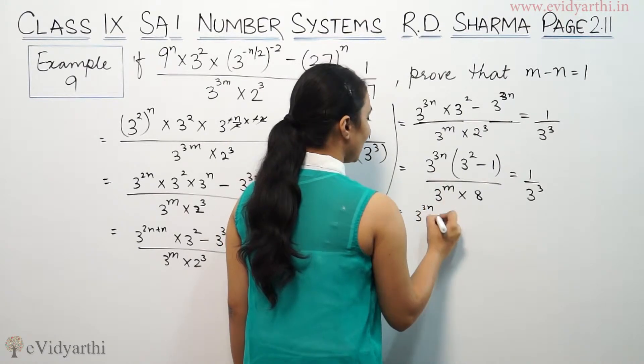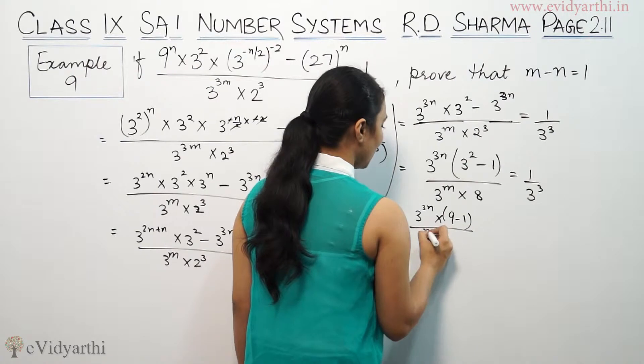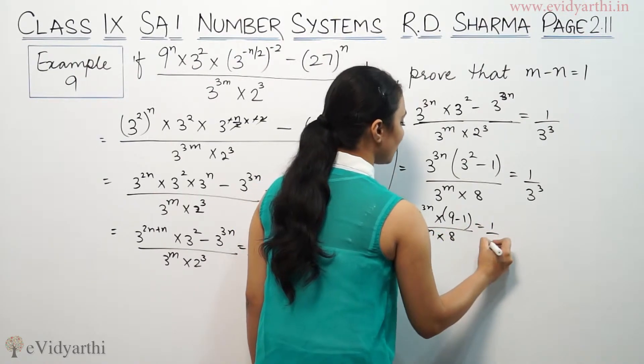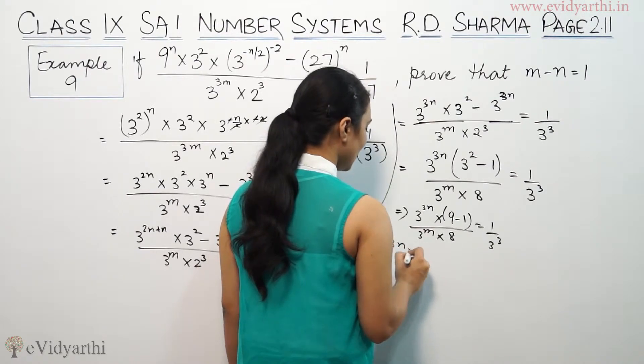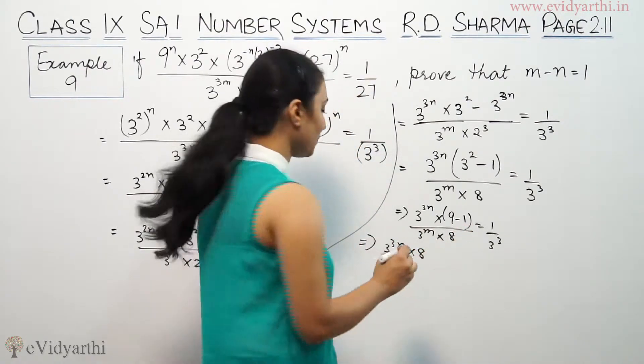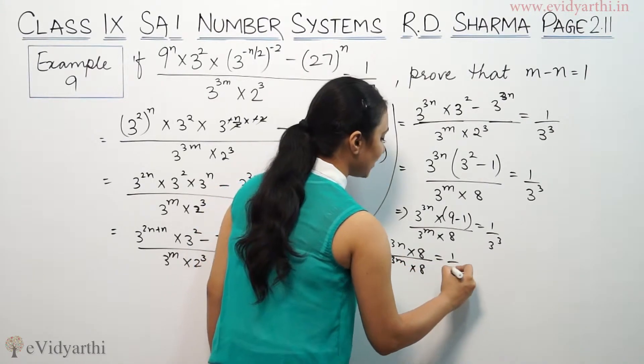3^(3n) times, since 3² is 9 minus 1, that's 8 upon 3^(3m) × 8 equals 1/3³. This implies 3^(3n) × 8 upon 3^(3m) × 8 equals 1 by 3³.